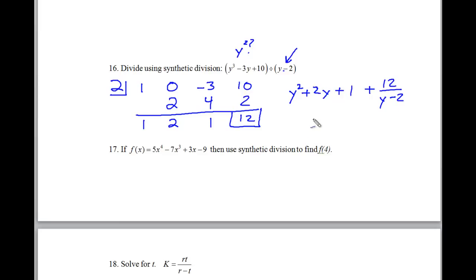So to review here, you are taking your 1, 2, 1, and you're lowering the power by 1 because we divided by y. So the power of y cubed gets dropped to y squared, and everything drops a power. The remainder has to be written as a fraction divided by this here at the end.